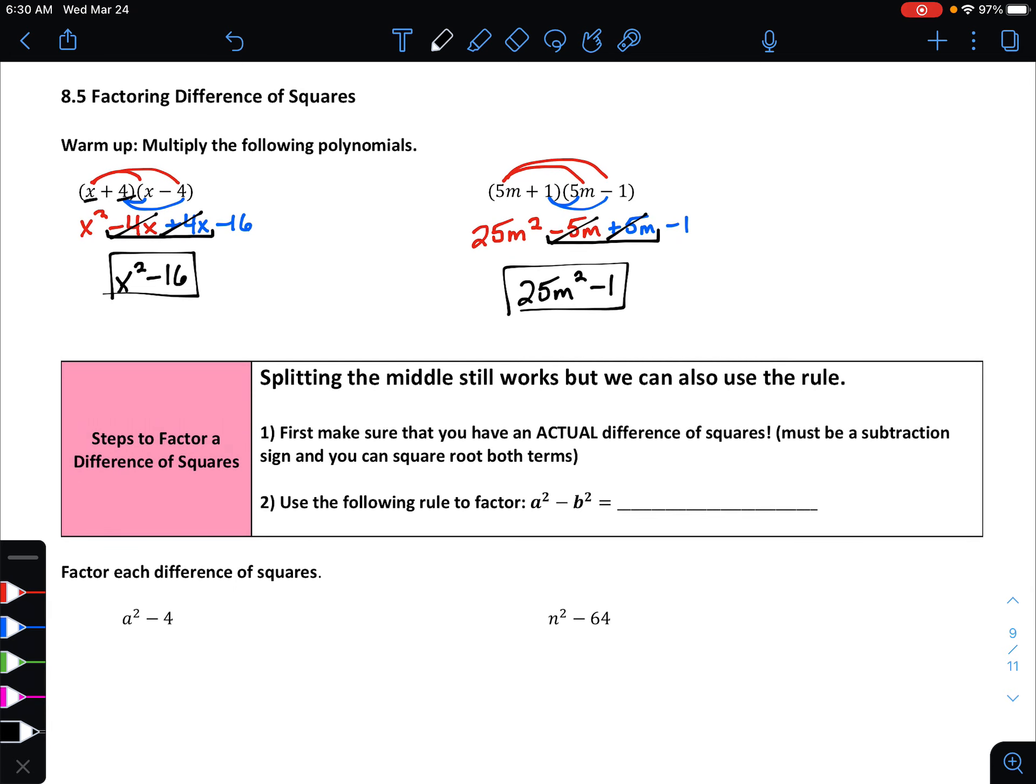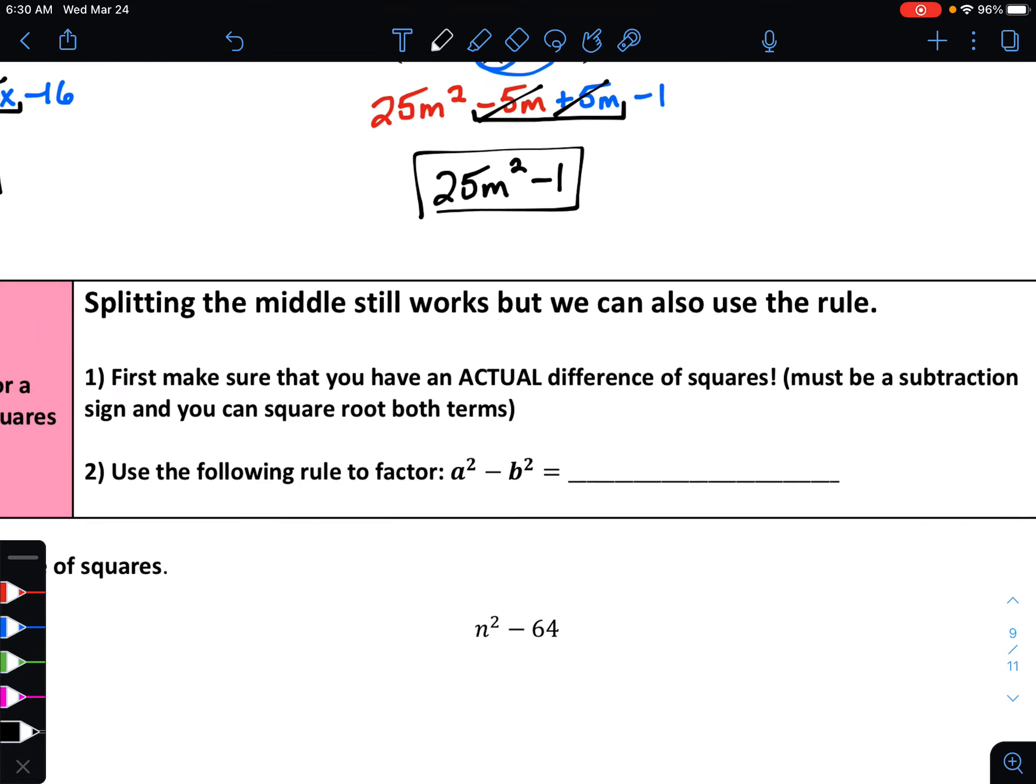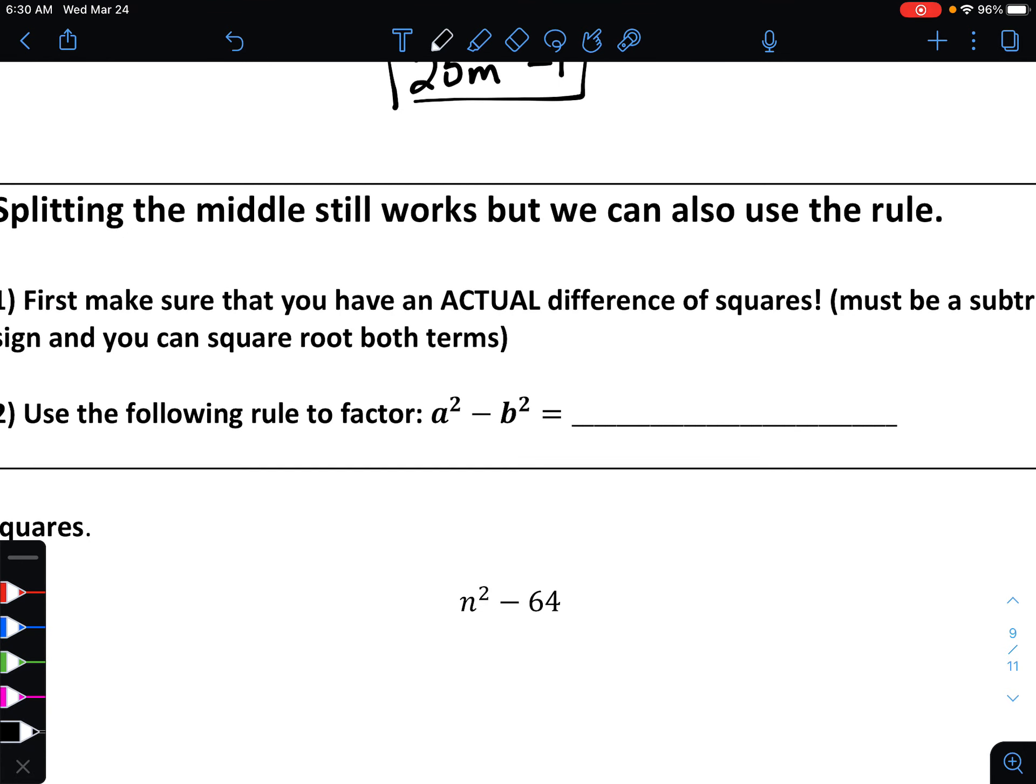And so if we want to go backwards, which is truly what factoring is. Remember, factoring is just a way to undo multiplication. Then we can kind of use that process in reverse almost. Now, keep in mind, split in the middle still works. So we can still use the same rules that we saw before. In fact, I'll show you that for the first example.